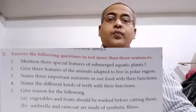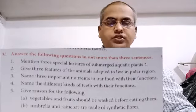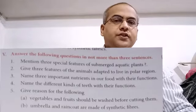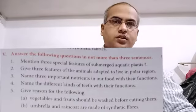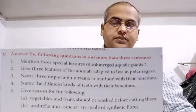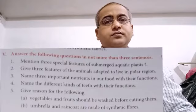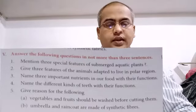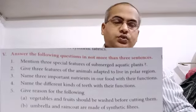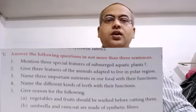Now moving to question number 3: give 2 examples of each of the following. Number A, protein-rich food — meaning food which contains protein. The answer is pulses and egg; these foods contain protein. Next, second class lever — nutcracker and bottle opener are second class levers.